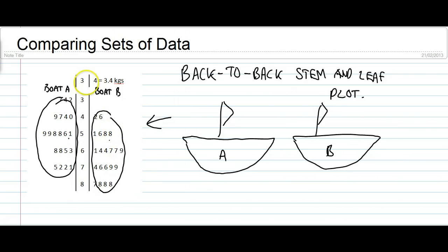The key up here shows us how to interpret the numbers. So when there's a stem of three and a leaf of four, it means there was a 3.4 kilo fish. So in this boat B data, this is a 4.2 kilo fish and a 4.6 kilo fish, and so on.